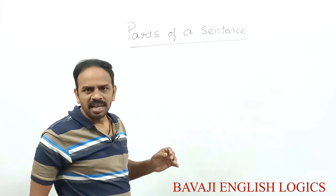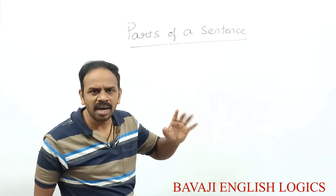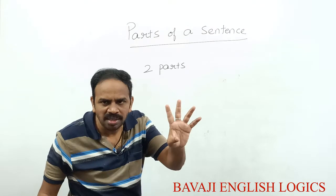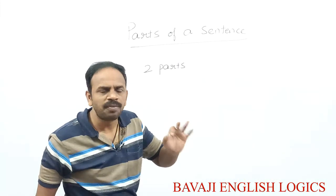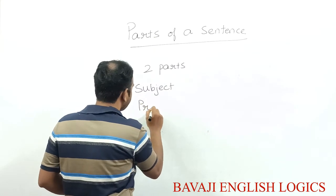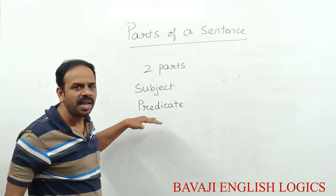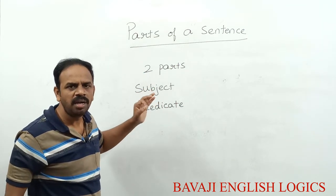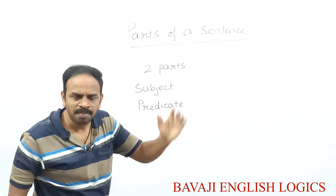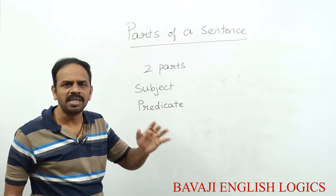Parts of a Sentence. There are two parts in every sentence. What are the two parts of a sentence? Subject and Predicate. We should know what is a Subject and what is a Predicate — we should have a clear idea on both.